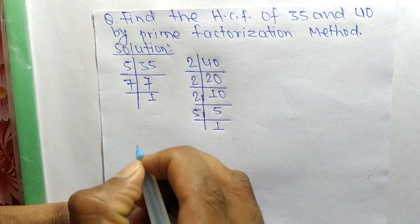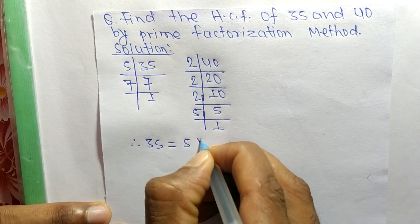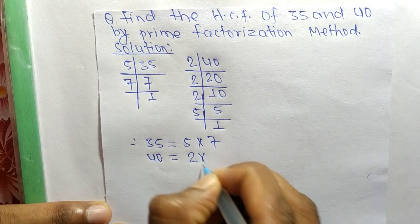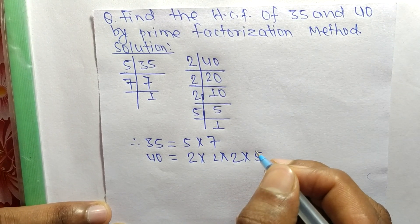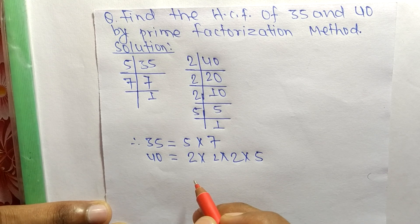So from these prime factors, we can write 35 = 5 × 7 and 40 = 2 × 2 × 2 × 5. Now we find out the common factors in these prime factors.